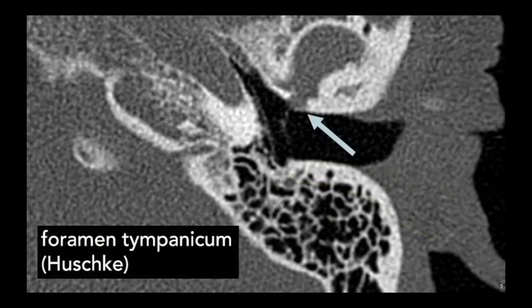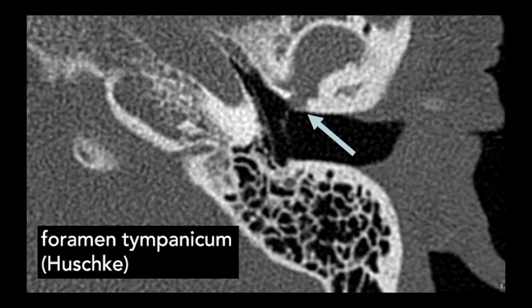One normal variant to discuss is the foramen tympanicum, which can be a small bony defect in the anterior inferior osseous external auditory canal. It communicates with the temporomandibular joint. A small incidental finding is just a normal variant; however, this can be a route of spread of infection, or if large enough may cause symptoms with mastication.